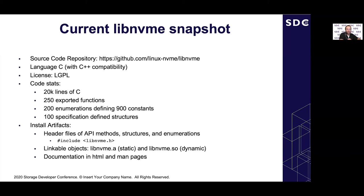There are over 250 exported functions from the library, along with most of the specification-defined structures, all the enumerations for constant values and command parameters, and various functions for decoding all fields defined by the spec. Documentation is treated as a high priority and is provided in both man pages and HTML formats, leveraging the Linux kernel-doc format. Since the NVMe specification is an ever-moving target, the maintenance goal for LibNVMe is to provide symbol versioning so that exported functions continue to work in applications developed on older versions of the library.